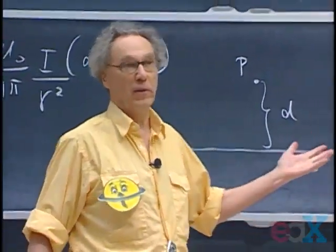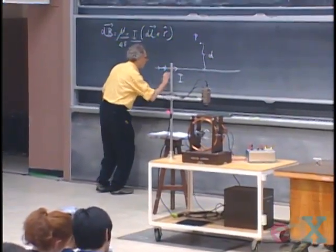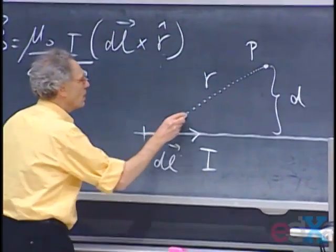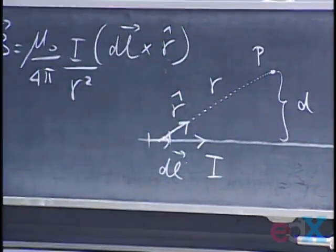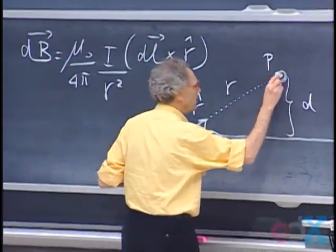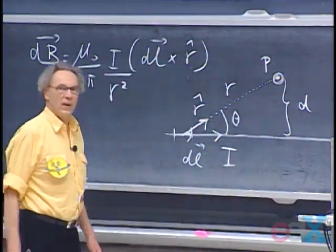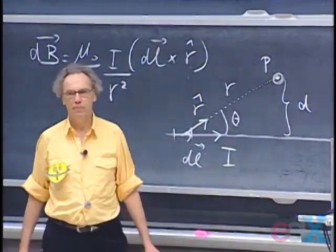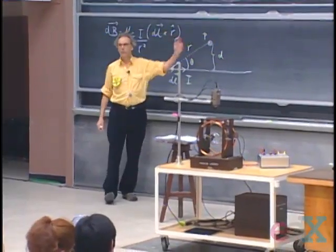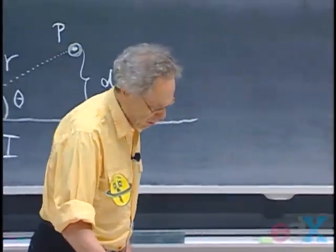It will be a stupid thing to do, but you can do it. You take a small element dL of the wire. This distance is R. This is the unit vector R̂ in the equation, and you can calculate the contribution to the magnetic field, which comes out of the blackboard due to section dL. This angle is theta, and the sine of theta is D divided by R. Then you have to do an integral over the whole wire, theta zero to pi. Not a very smart thing to do — a waste of time.